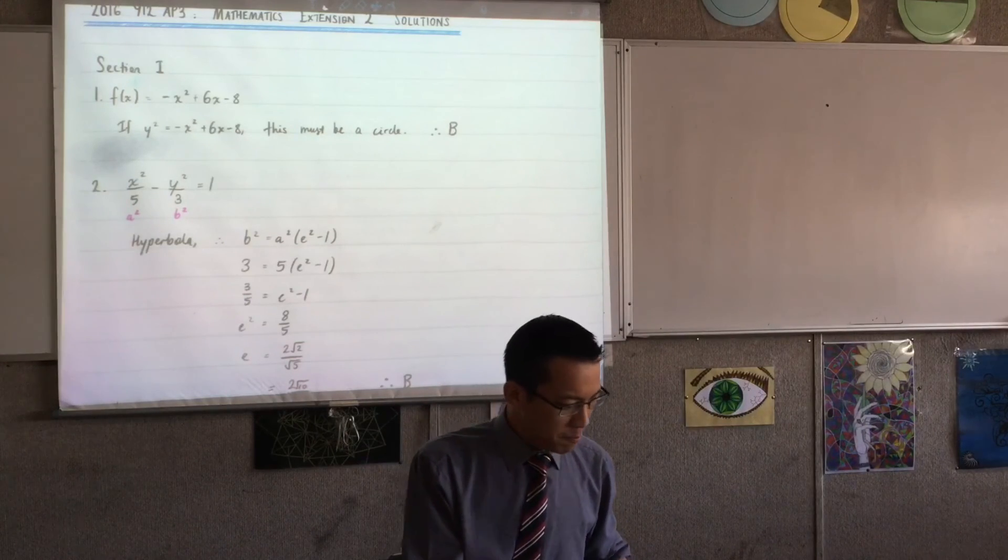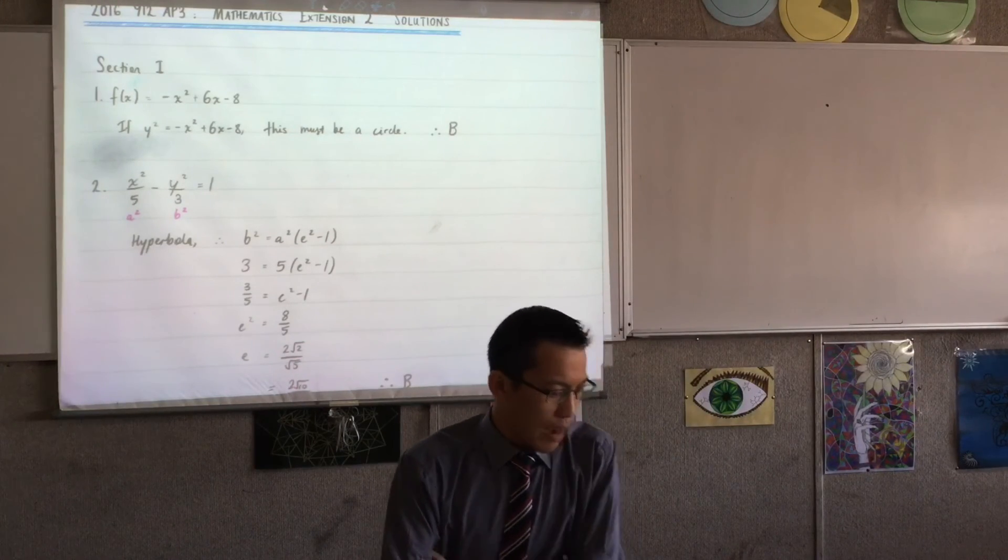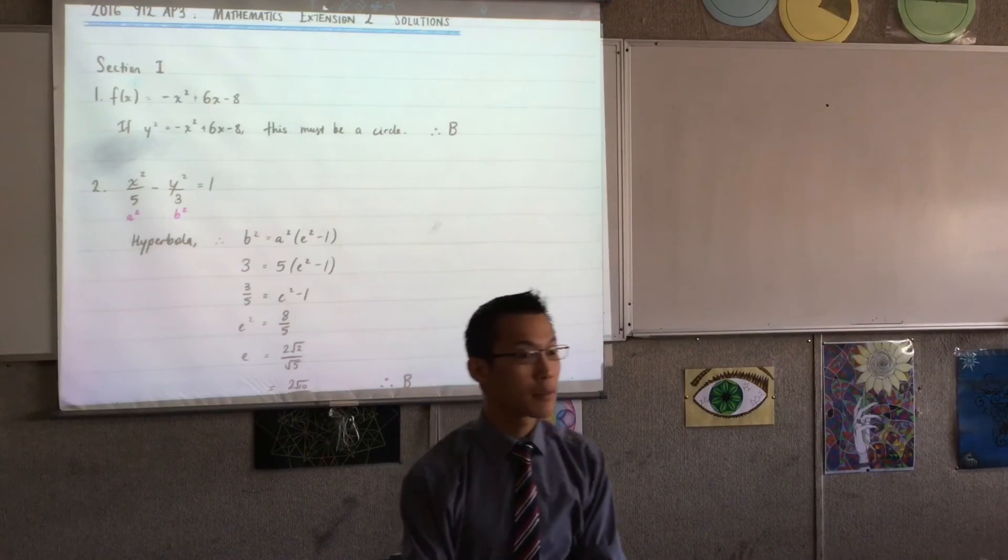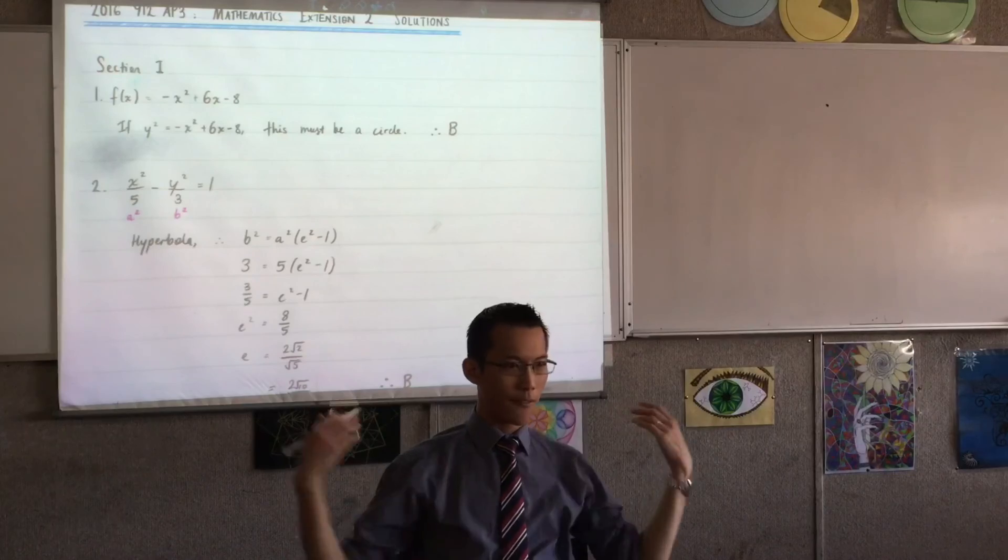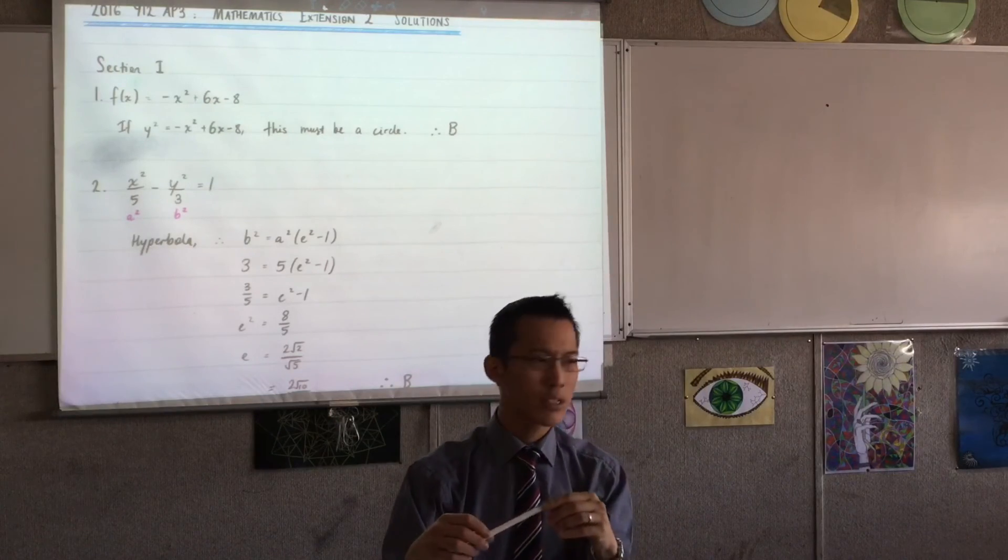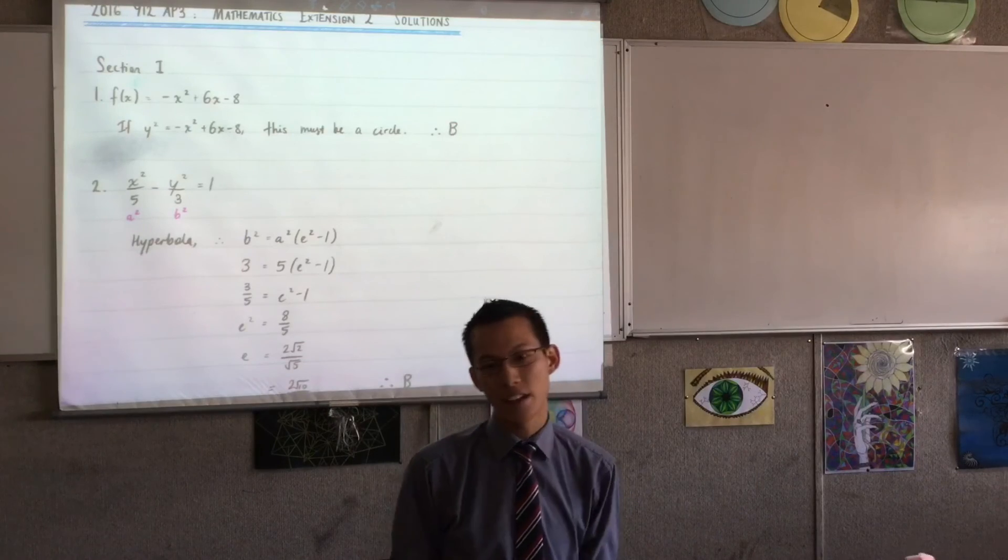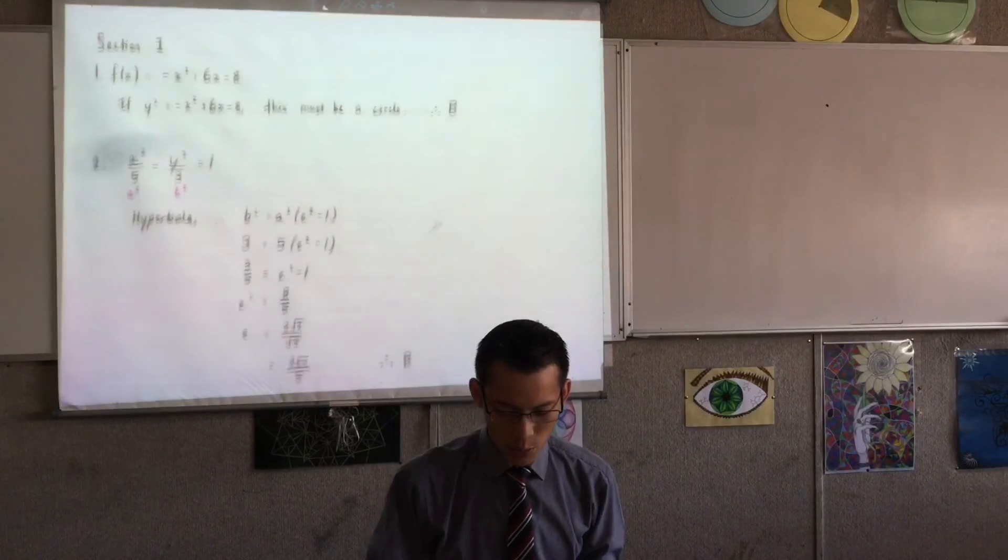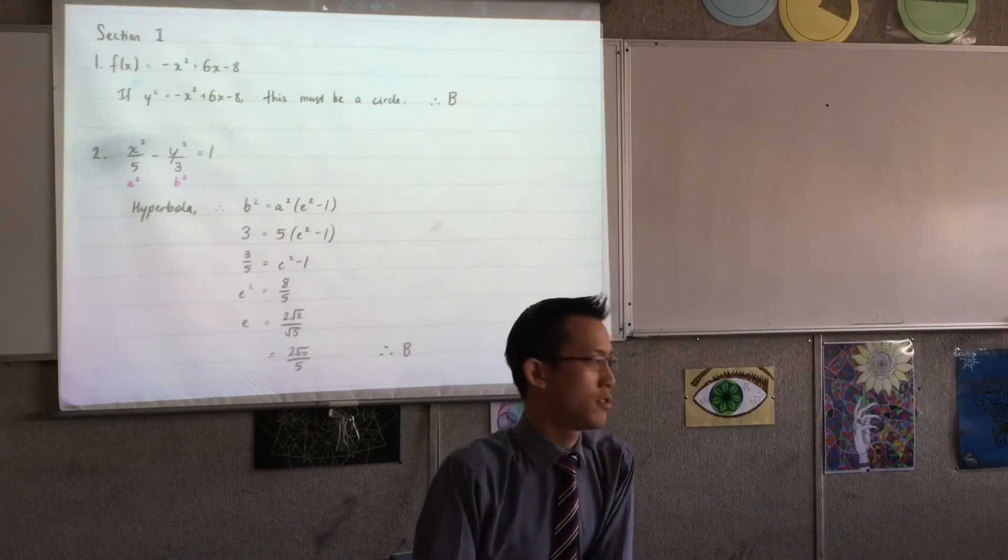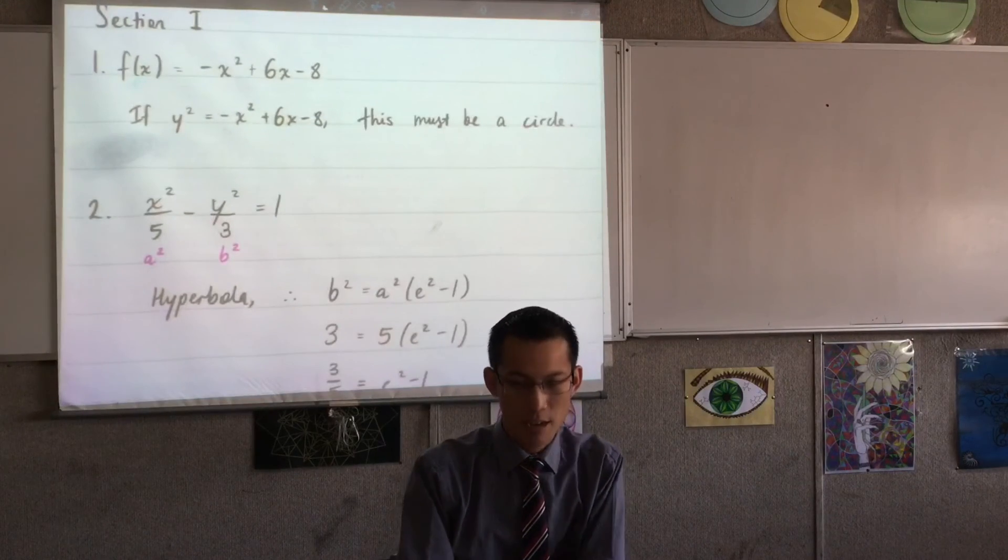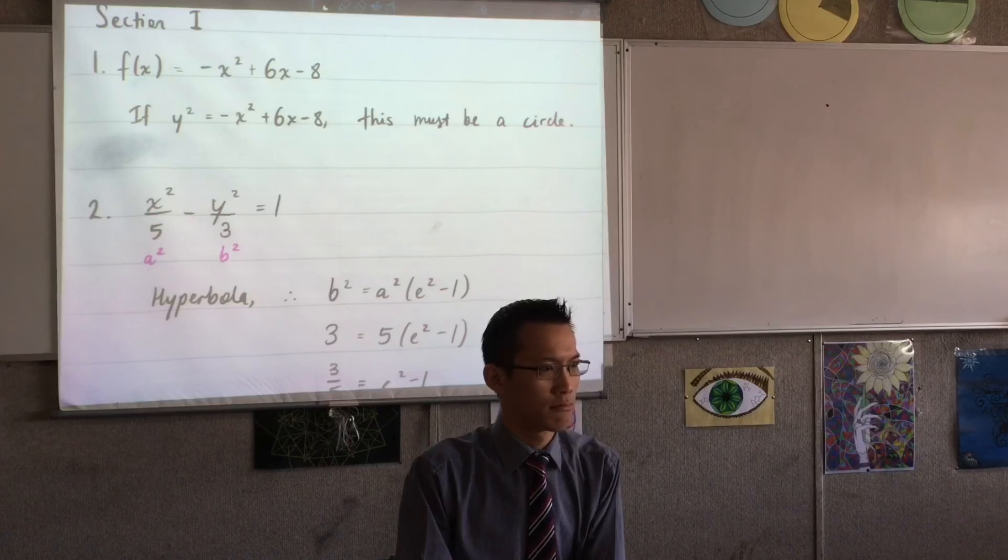Question 1. Which of the following is the graph of y squared equals f of x? This is multiple choice, so you want to think about what is the most efficient path through this question, and I don't necessarily have to go ahead and solve everything and work out all the intercepts. In fact, you don't need to do any of that, because when you have a look, if you substitute y squared for f of x, you can see right from this first line, clearly that's a circle.